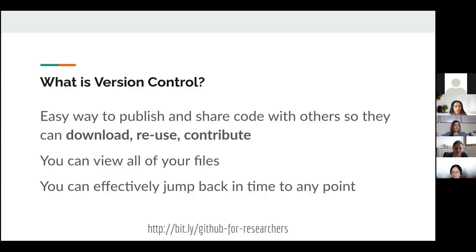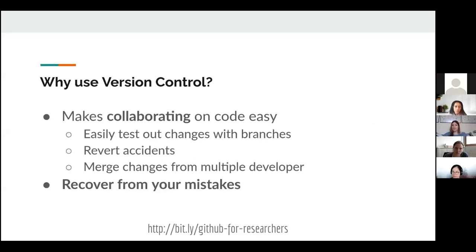Publishing and sharing open source code — one of the easiest and most effective ways to do this is version control. I'm sure you're all learning about Git and GitHub. Version control is a fantastic way to publish and share code with others. It gives you a whole timeline of your software and makes it easy to reuse, contribute, and make modifications. Collaborating is easy, and you can revert accidents — if you make bad changes in your code, you can always go back. It also makes it easy to integrate changes from multiple developers. With Galaxy, there are some 200 contributors to the codebase or training materials, and all of us can work together collaboratively because we use version control.